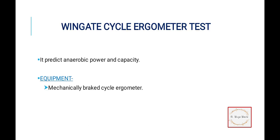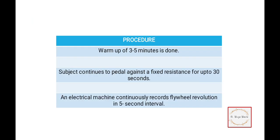The next test is the Wingate cycle ergometer test. This is also for anaerobic power and capacity testing. We need a mechanically braked cycle ergometer. In the procedure, we warm up the athlete for 3 to 5 minutes on that cycle, and then we apply resistance.